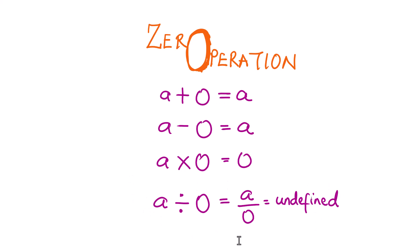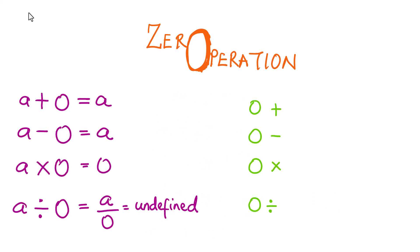Now let's look at another arrangement where zero is positioned relative to 'a'. Zero added to a gives a positive value a. Zero minus a results in negative a. Zero times a gives zero. And finally, zero divided by a — which is the same as saying we have a total number of individuals in a system divided into any number of groups.